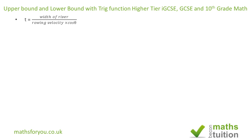We're working with a formula here: T, which is time, is equal to the width of the river divided by the rowing velocity times cos theta. Theta is the angle subtended by a line drawn from one side of the river to a given point on the other side — the direction of rowing.